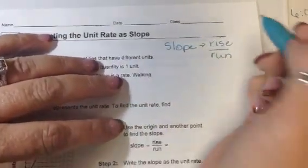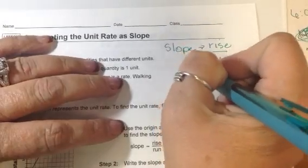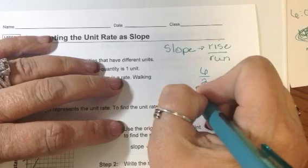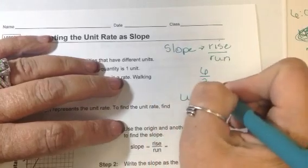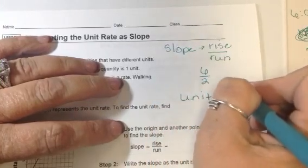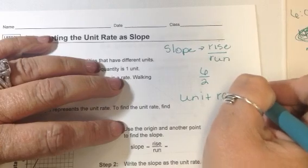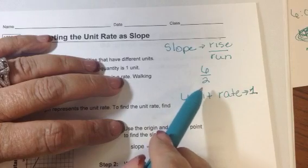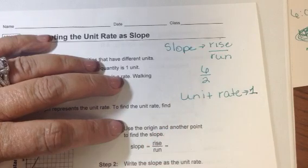So if someone told me that I had a slope of, say, 6 over 2, and I needed to find the unit rate, that means that I'm going to take that 6 over 2 down to 1 unit, which means I want to know what happens when this bottom number is 1, or what happens at 1.